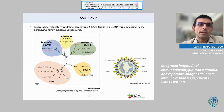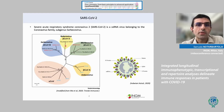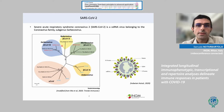And up here instead, beta coronaviruses of lineage B and C, which have emerged in the last 20 years, that can cause or have caused epidemic and pandemic diseases like SARS-CoV-1 in the early 2000s, MERS, and SARS-CoV-2 in the last couple of years.